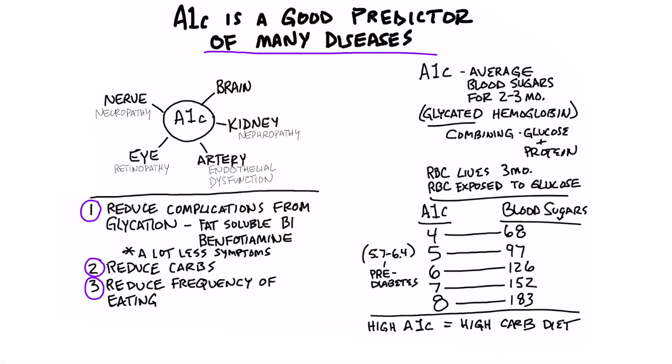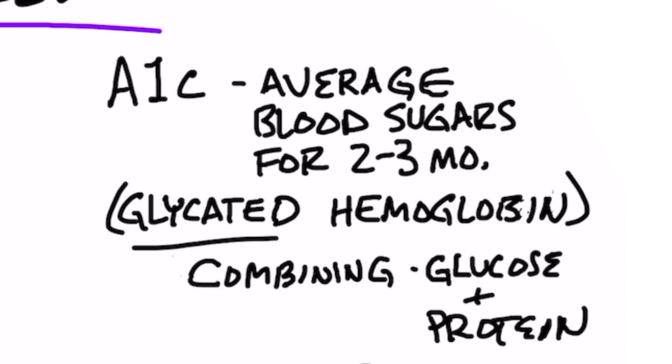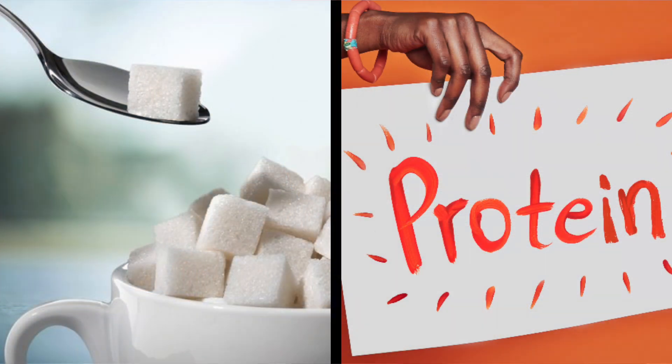I want to give you some data on A1C. It's a really good predictor of all sorts of diseases. So what is A1C? It's simply a test that gives you feedback on your average blood sugars for two to three months. In this measurement is something called glycated hemoglobin. What does glycated mean and what does hemoglobin mean? Hemoglobin is the protein in red blood cells. Glycated, or glycation, is basically glucose sticking to the protein. So when you expose this hemoglobin protein to too much glucose, it becomes glycated, and the quantity of sugar and protein combining together will raise your A1C.